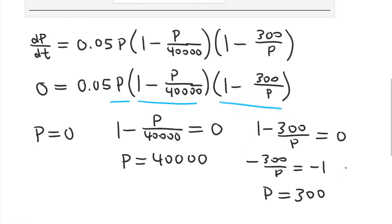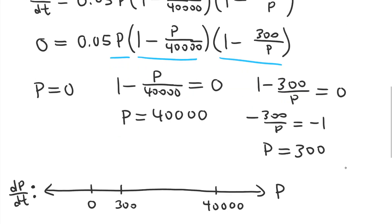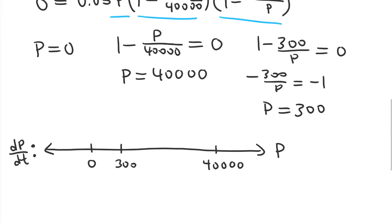So now we've found the zeros of the derivative. So this is the derivative, dP/dt. We found the zeros of it. So I'll draw a number line here. Here's 0, here's 300, and all the way over here, here's 40,000. And again, this is a scale, the horizontal scale here is P. And this is similar to the first derivative test, right? We take the derivative, find the zeros, and then find what's the sign of the derivative on all of these intervals.